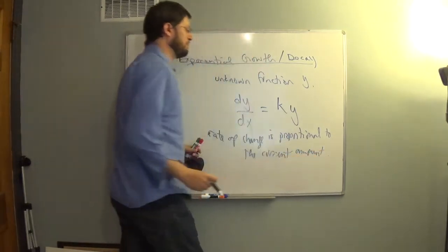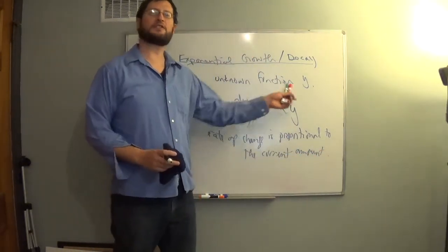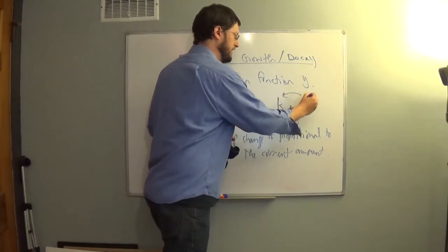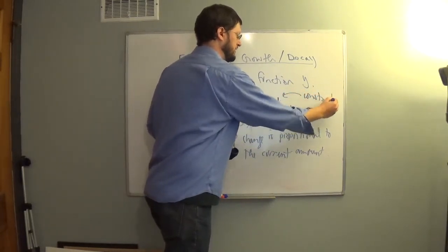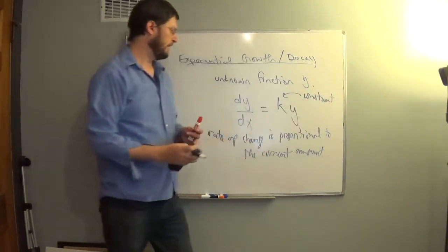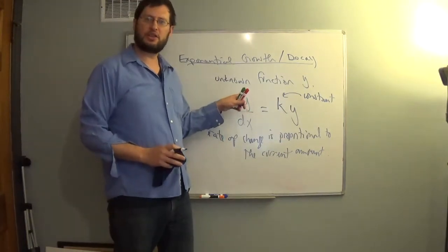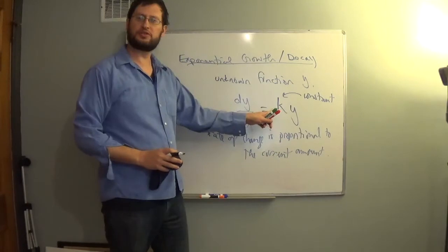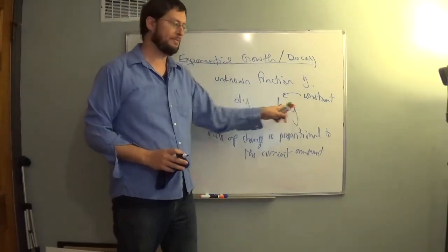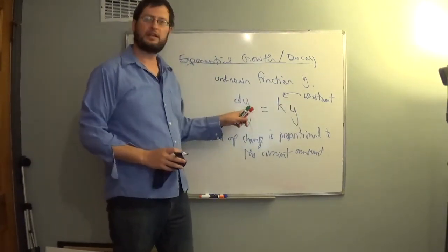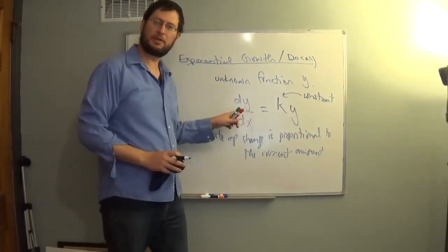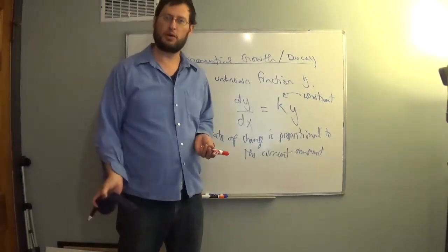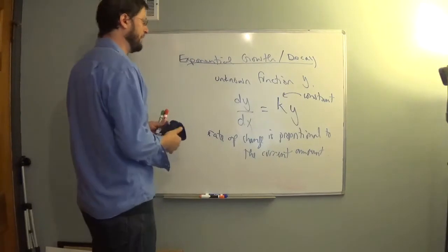That's what proportional means — it differs by a constant, so this is our constant of proportionality. If y is the population, the rate of change of y is proportional to y. The more we have, the faster it's growing. That's really what's happening.